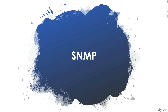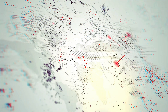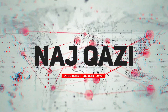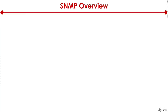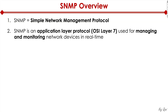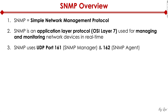Let's quickly take a look at SNMP. SNMP stands for Simple Network Management Protocol. It's an application layer protocol that exists on OSI layer 7. It's used for managing and monitoring network devices in real time, and it uses UDP port 161 and 162.